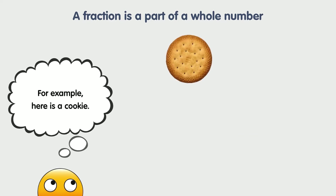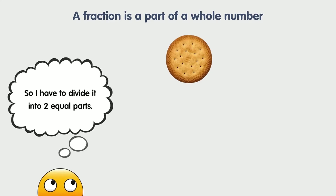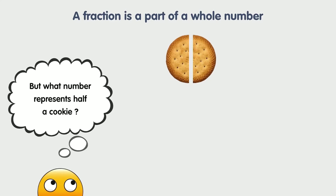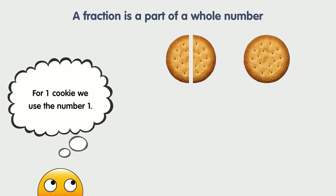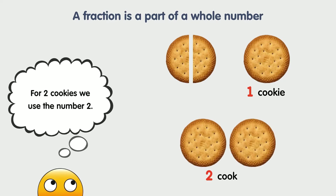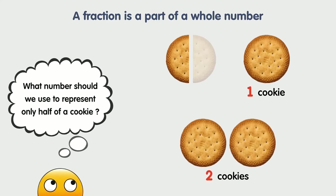For example, here is a cookie. Suppose I want to eat only half of this cookie, so I have to divide it into two equal parts. But what number represents half a cookie? For one cookie we use the number 1, for two cookies we use the number 2. What number should we use to represent only half of a cookie?